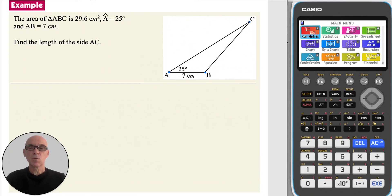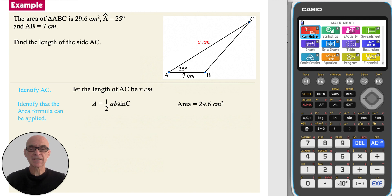In this question, we're given the area of the triangle, and we're asked to find the length of the side AC. If we start by identifying AC, I'm going to let it equal X, and then identify that the area formula can be applied, since the 25 degree angle is between the sides of length X and 7 centimeters.